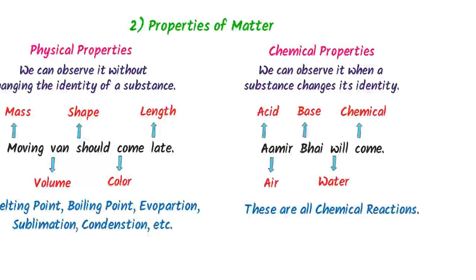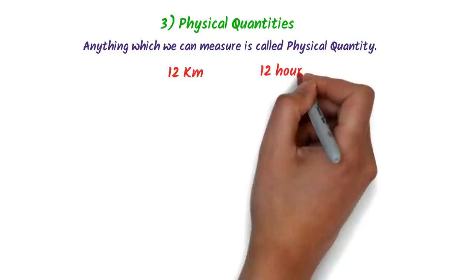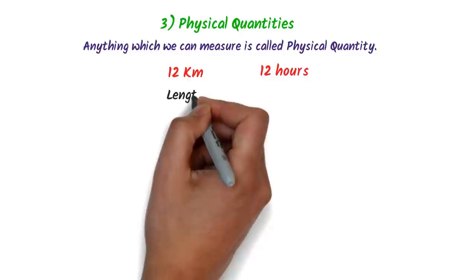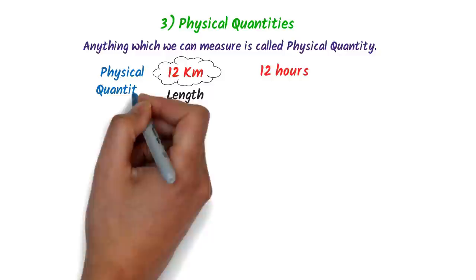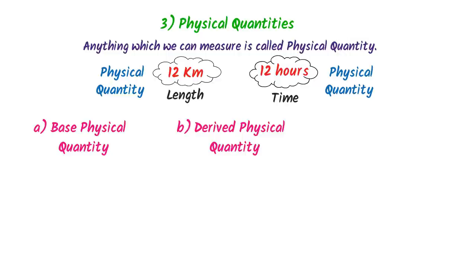The third topic is physical quantities. Anything which we can measure is called a physical quantity. For example, 12 km or 12 hours — we can measure length like 12 km, so length is a physical quantity; similarly, time like 12 hours is also a physical quantity. This topic is divided into three sub-topics: base physical quantities, derived physical quantities, and the international system of units.